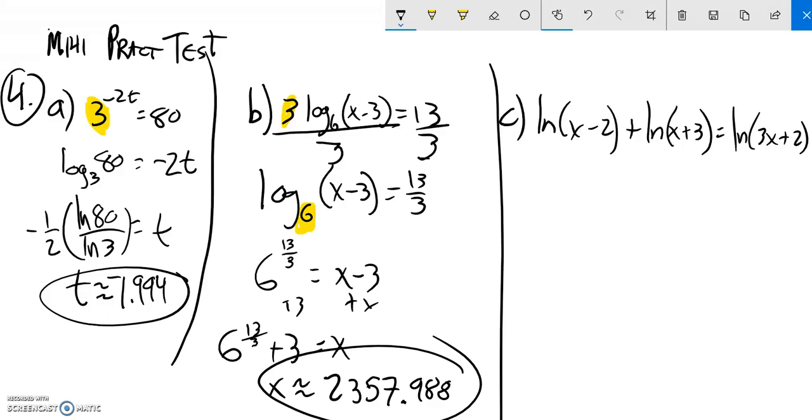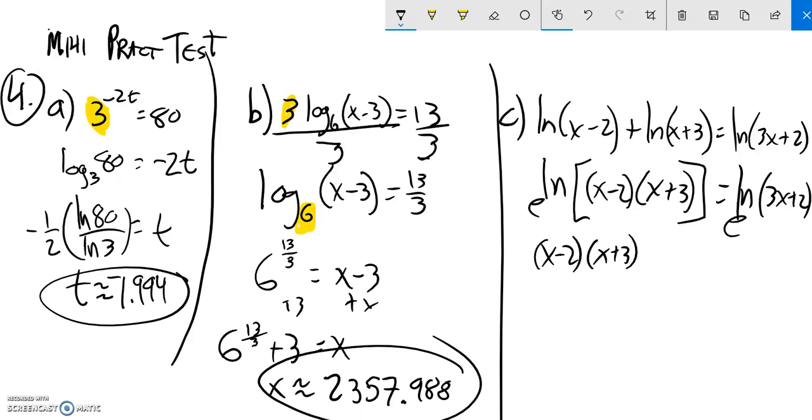Last one. Add these three natural log statements. So I'm going to condense them. So I'm going to make this into a single natural log statement. These multiplied together equals natural log of 3x plus 2. Now I have natural log on both sides. I could go e to the power of both sides, or I could just say they're both natural logs. So the natural logs don't matter. Basically, I have this x minus 2 times x plus 3 equals 3x plus 2.